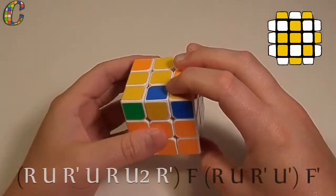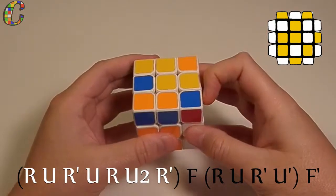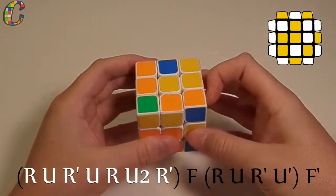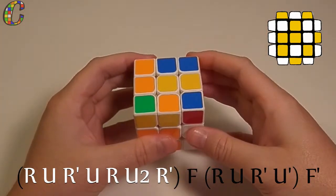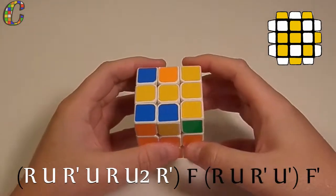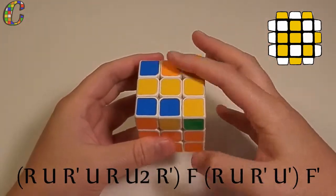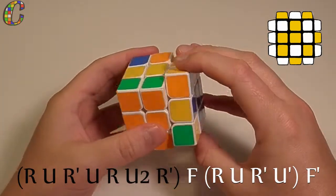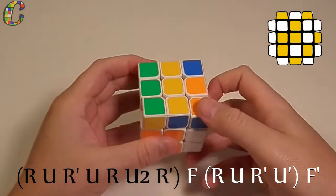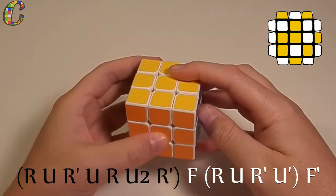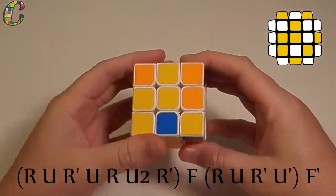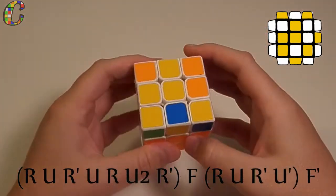You do soon, r, u, r prime, u, r, u2, r prime, and then you do this OLL: f, r, u, r prime, u prime, f prime. And this is how I execute this OLL.